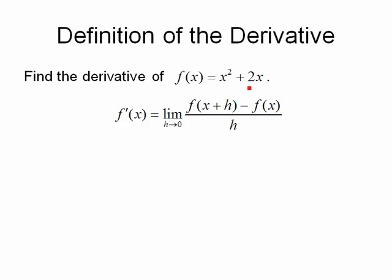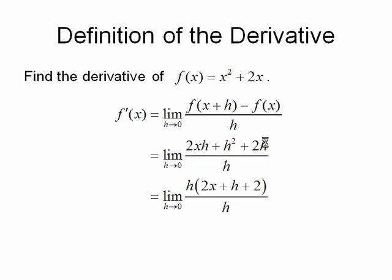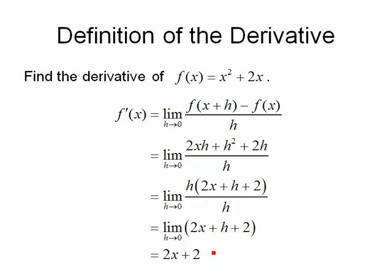So let's take our definition and put that simplified numerator in place. We get the limit as h approaches 0 of 2xh plus h squared plus 2h divided by h. Notice there's an h in all of those pieces above — if we factor it out, it's going to cancel. After canceling, we can let h approach 0. Only one of the three remaining terms has an h in it, so that term drops out, and we're left with 2x plus 2. So the derivative of x squared plus 2x is 2x plus 2.